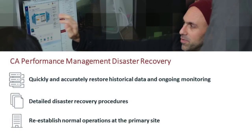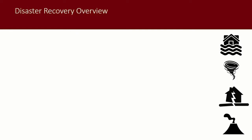Administrators of CA Performance Management need a contingency plan to quickly and accurately restore historical data and ongoing monitoring at an alternate recovery site in the event of a catastrophic failure at the present primary site. CA Performance Management version 3.1 establishes a detailed disaster recovery procedure meant to re-establish normal operations in the event of a localized major disruption at the primary site, such as a hurricane or a fire. Planning for a disaster is never a pleasant experience, but having a plan in the event of a catastrophe is a necessary step to ensure continued operations while minimizing downtime and data loss.